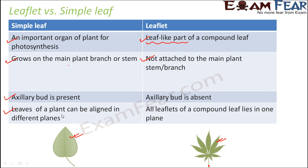Leaves of a plant can be aligned in different planes, but the leaflets of a single compound leaf must all lie on one plane. So all the leaflets of a given compound leaf need to be arranged on the same plane. These are important differences between a leaflet and a simple leaf, so never get confused between the two.